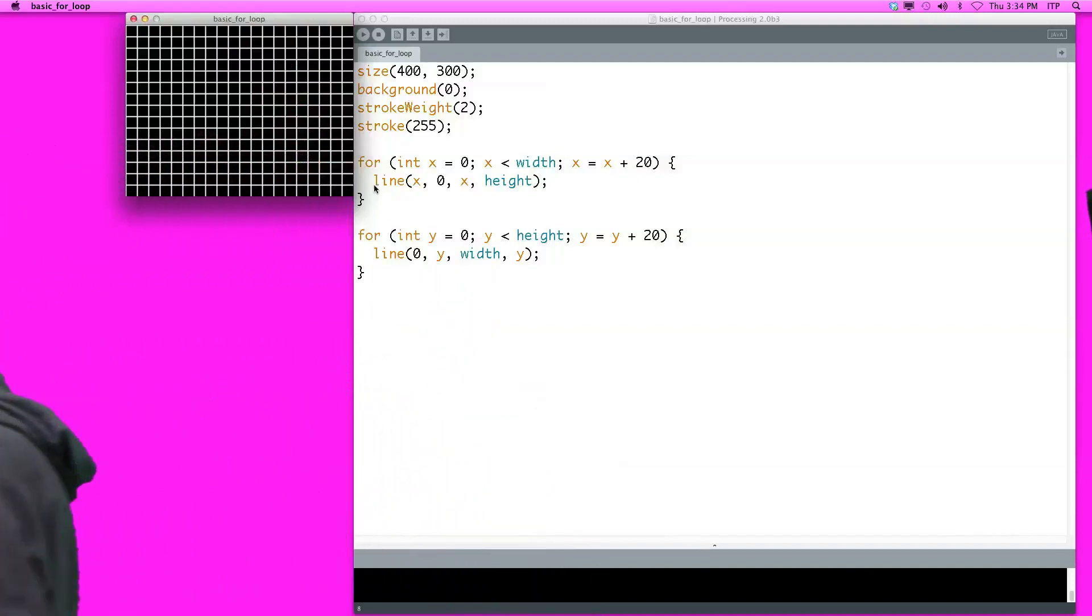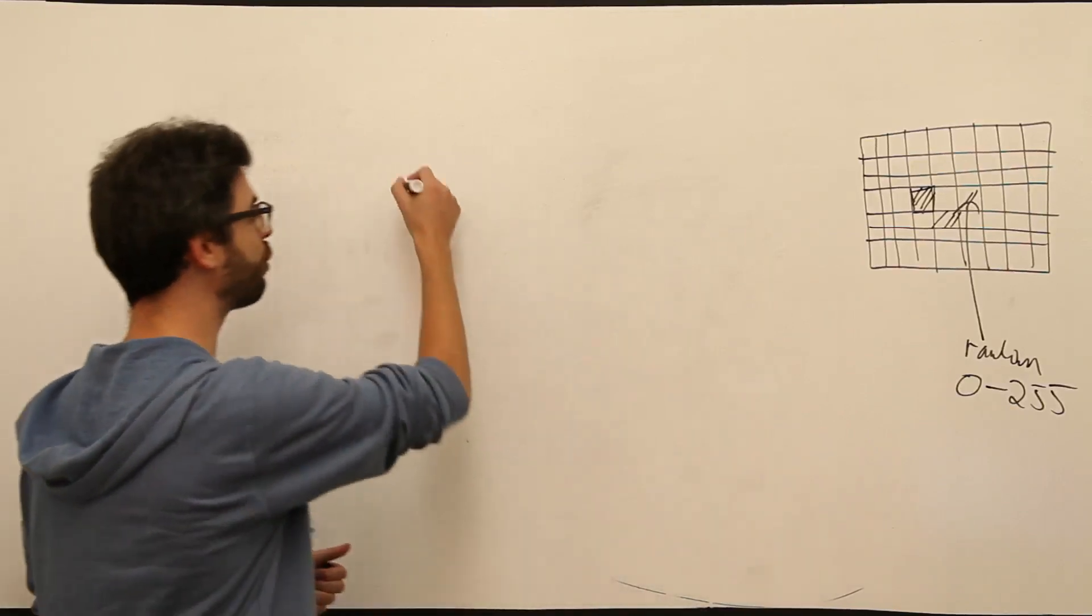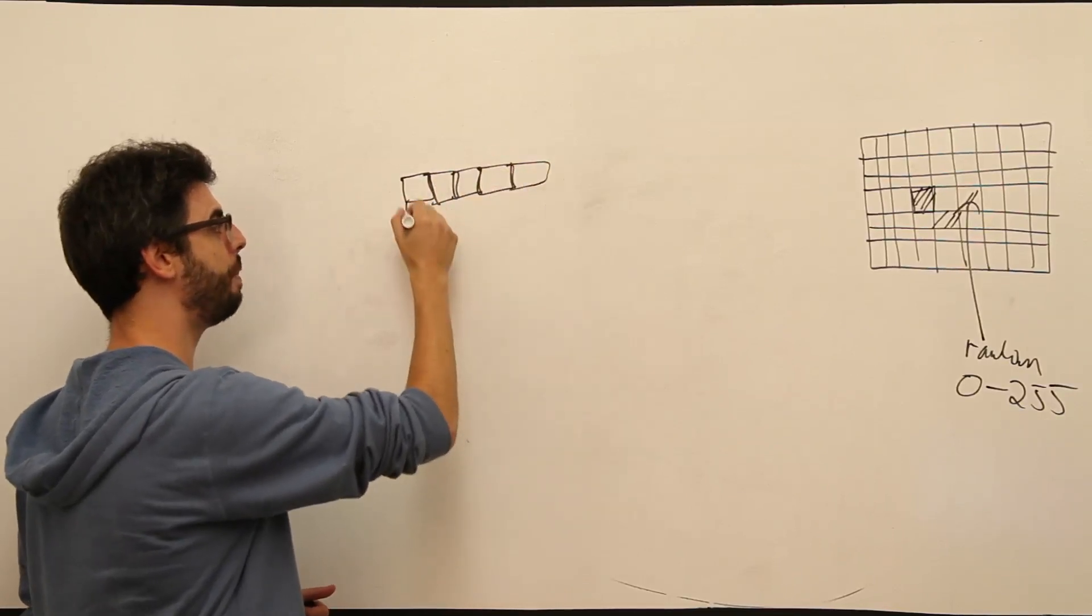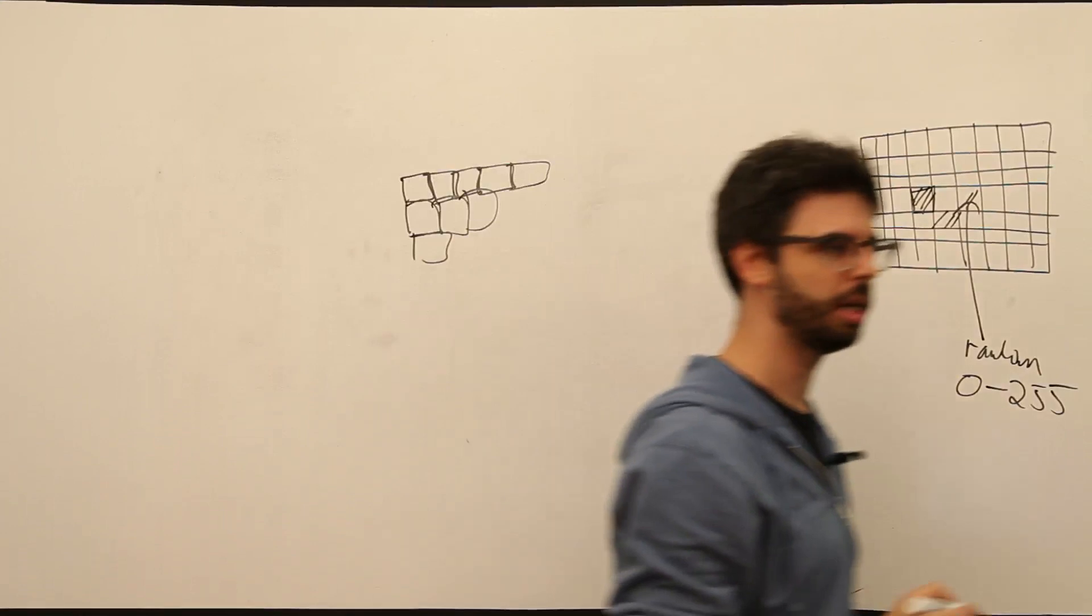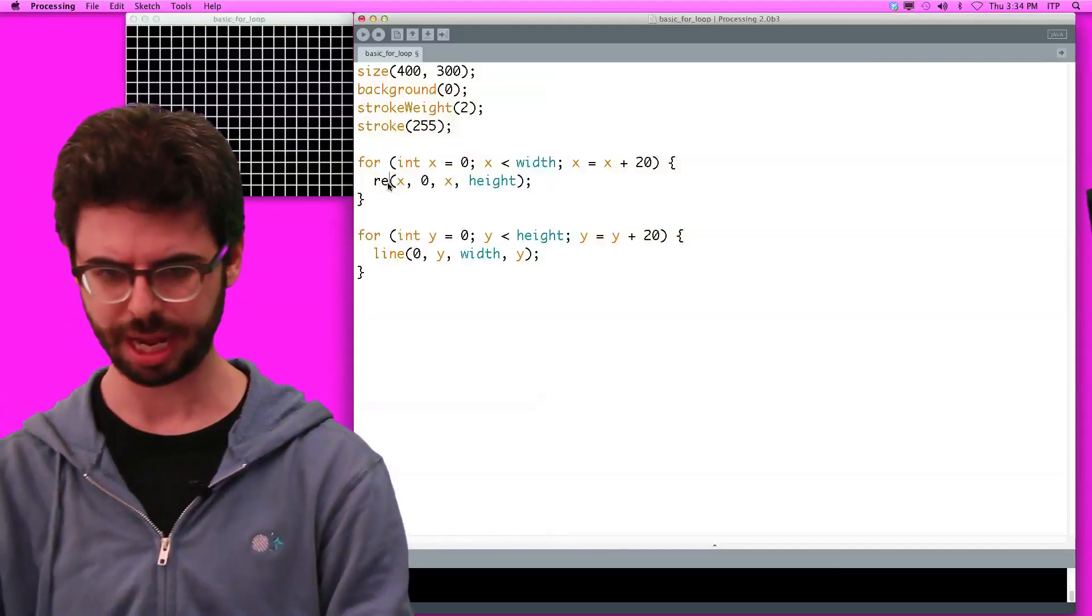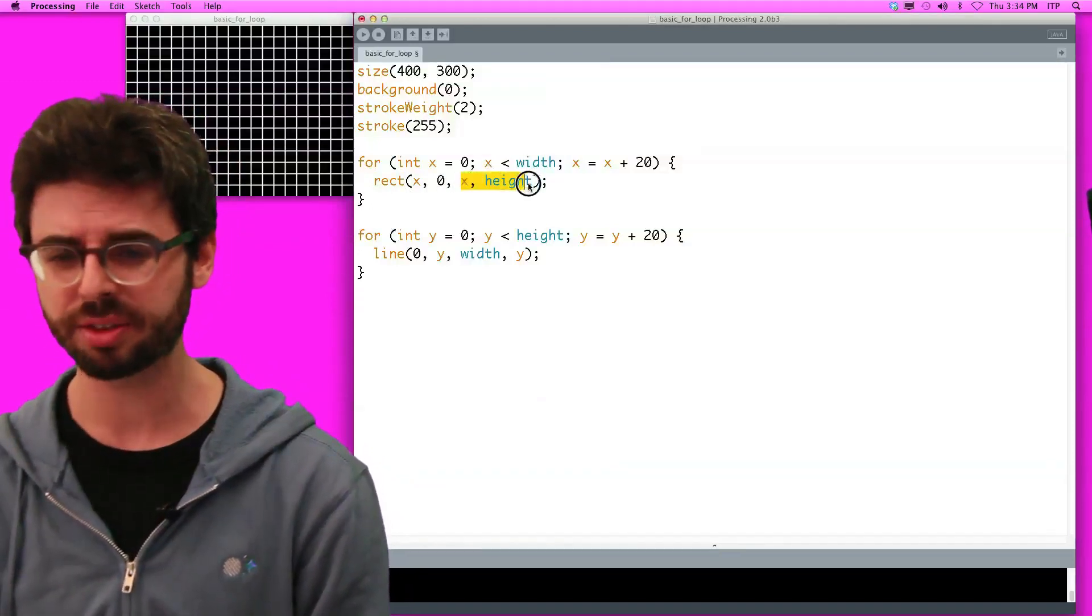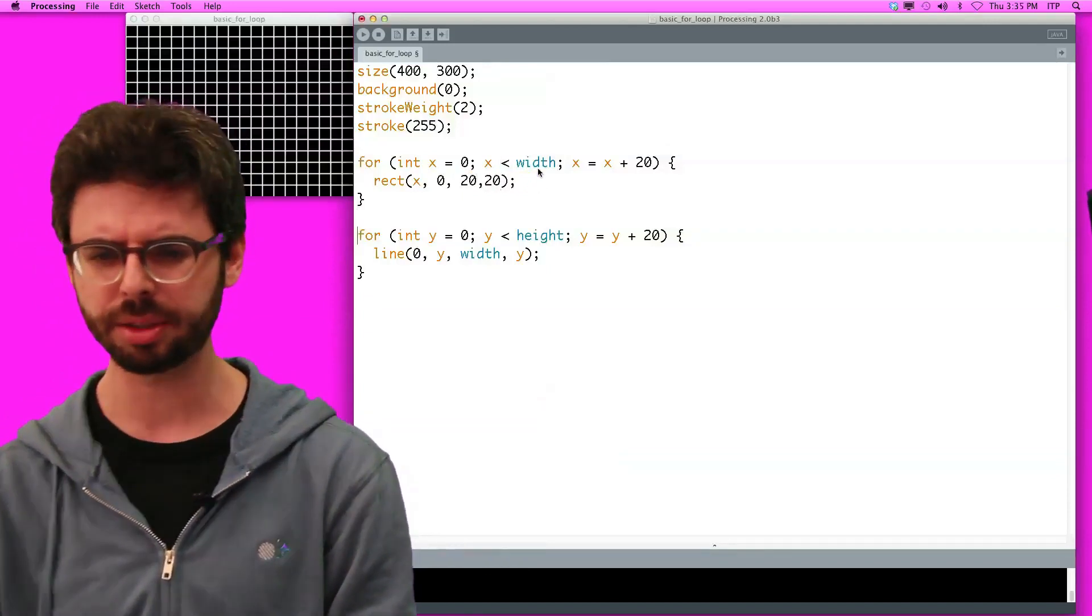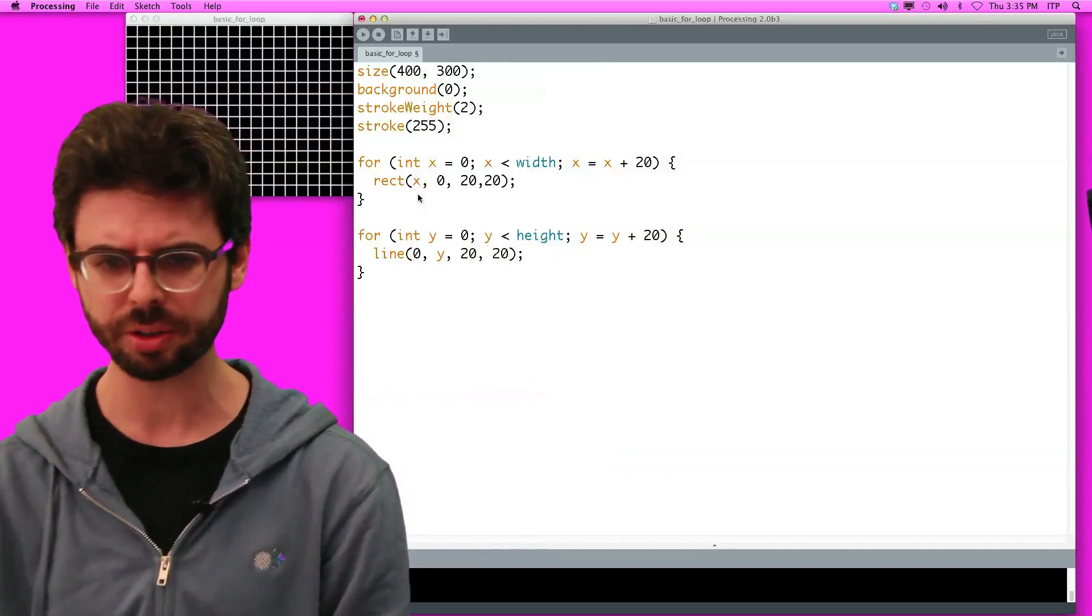But remember, we need to fill in those rectangles. So we need to make each element that we're drawing rectangle, all over in a grid pattern on the screen. So this shouldn't be too hard, right? All we have to do is change this to rectangle. The rectangle is at x comma 0, and its width is going to be 20, and its height will be 20. And this one will be 0 comma y, and its width will be 20, and its height will be 20, and it's also a rectangle.